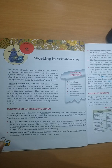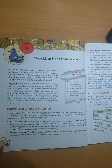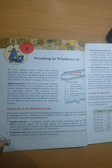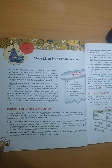As a resource allocator, the computer system has many resources like CPU time, memory space, file storage, input/output devices, and so on. The operating system is responsible for managing all these resources and allocating them to programs and users as and when required.